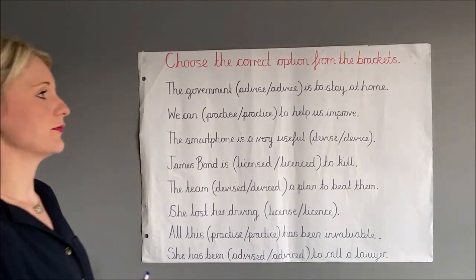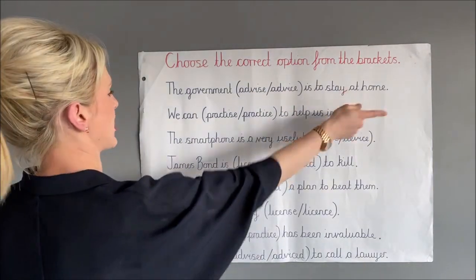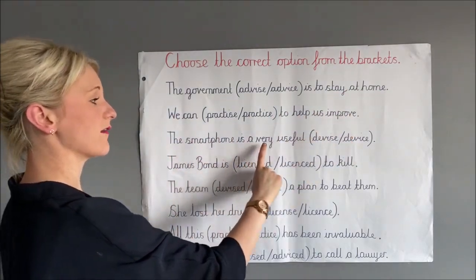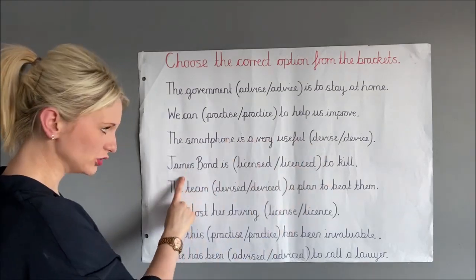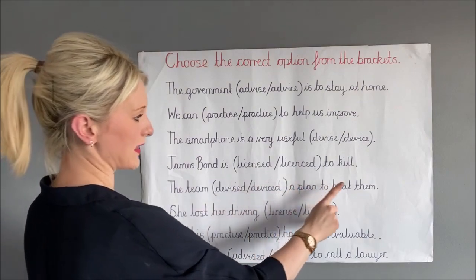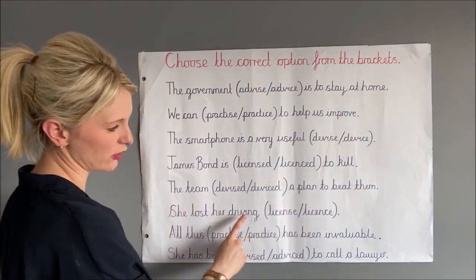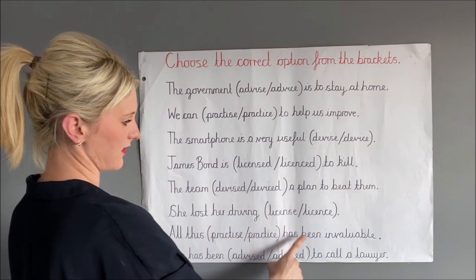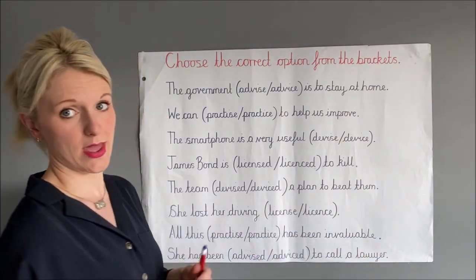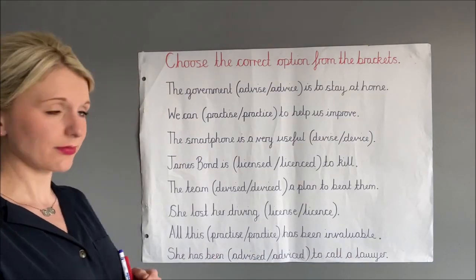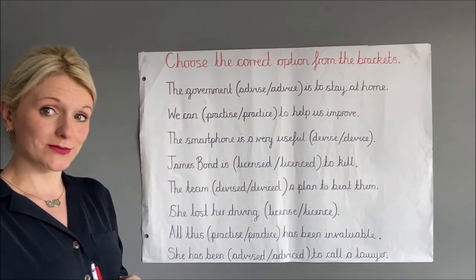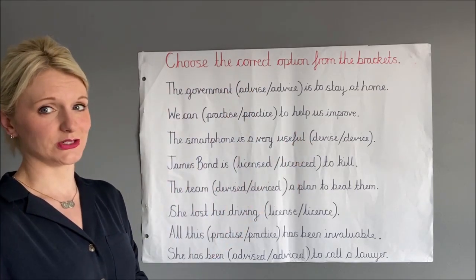The sentences are: the government advice is to stay at home; we can practice to help us improve; the smartphone is a very useful device; James Bond is licensed to kill; the team devised a plan to beat them; she lost her driving license; all this practice has been invaluable; and she has been advised to call a lawyer. Pause the video, have a go at choosing the correct option from the brackets, then replay the video and I will show you what you should have had.